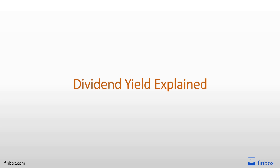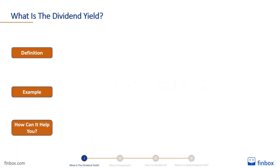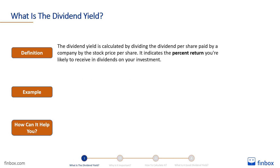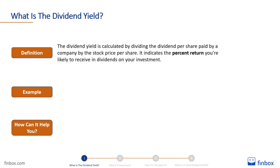Let's start. The dividend yield is calculated by dividing the dividend per share paid by a company by the stock price per share. It indicates the percent return you're likely to receive in dividends on your investment.